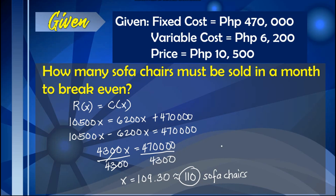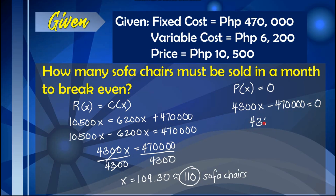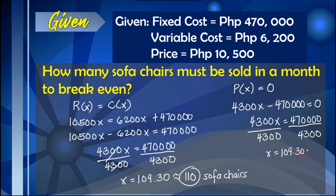Another procedure to find the break-even is by letting the profit equal zero. Using the profit function P(x) = $4,300x − $470,000 and setting it equal to 0, isolating the term with x gives $4,300x = $470,000. Dividing both sides by $4,300, this solves to x = 109.30, or rounded up, 110. So you have the option of using R(x) = C(x) or P(x) = 0 to find the break-even point.